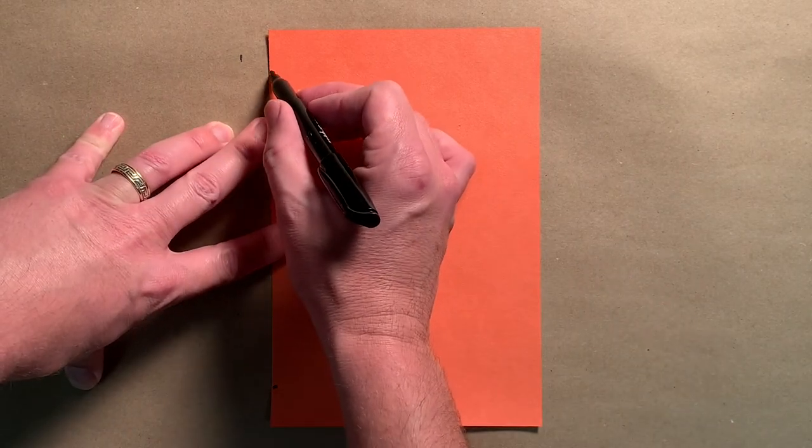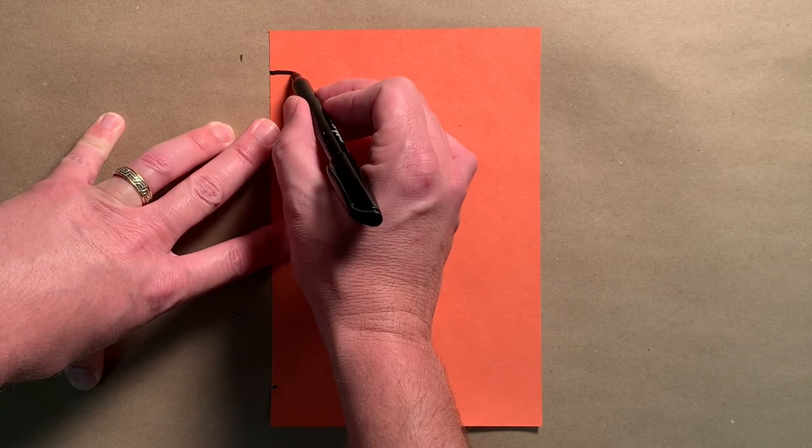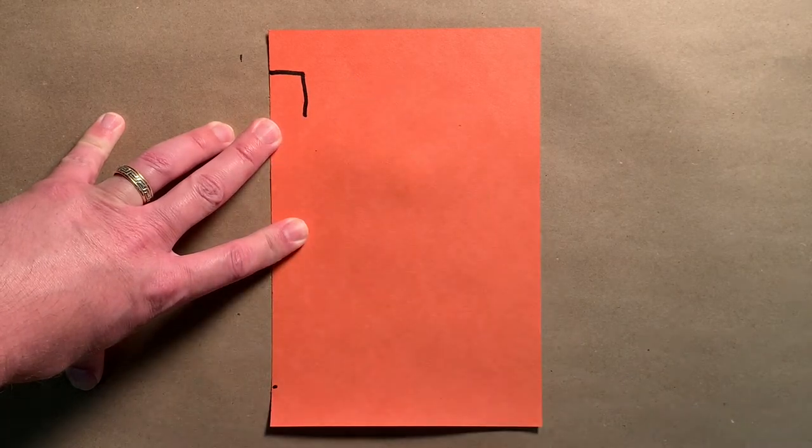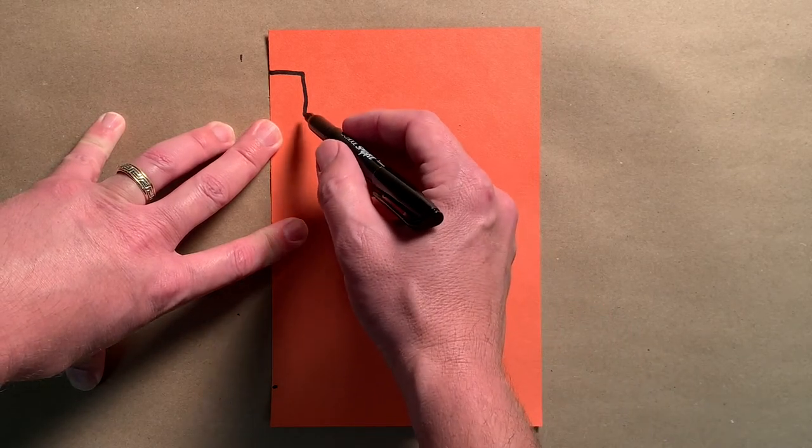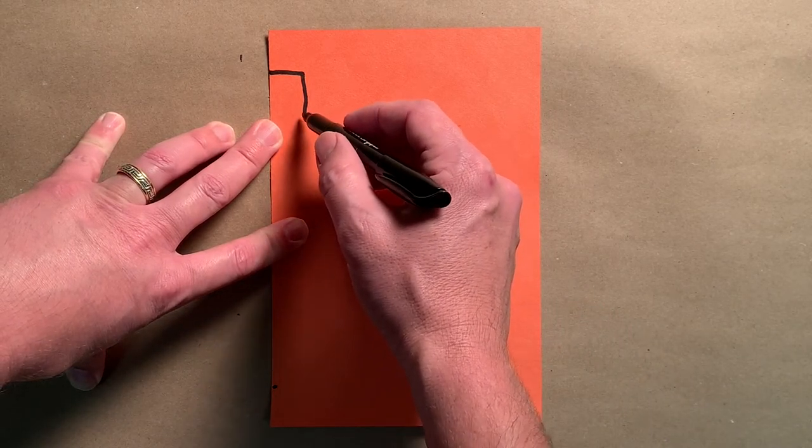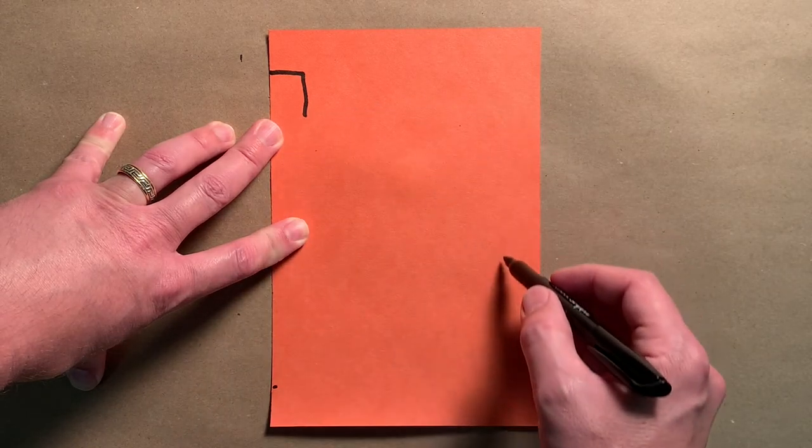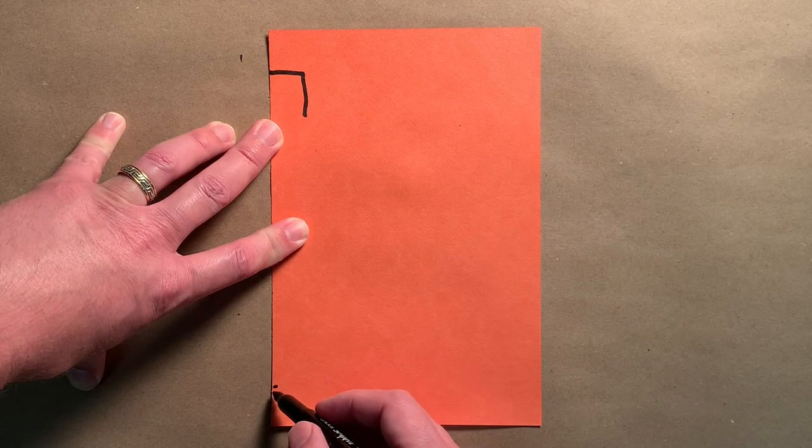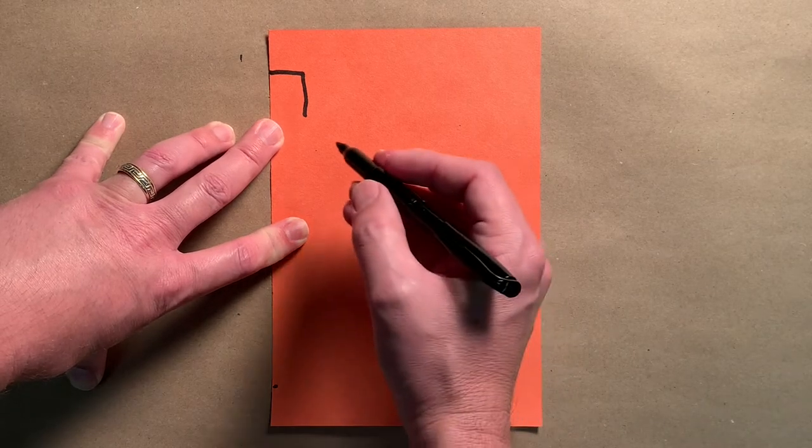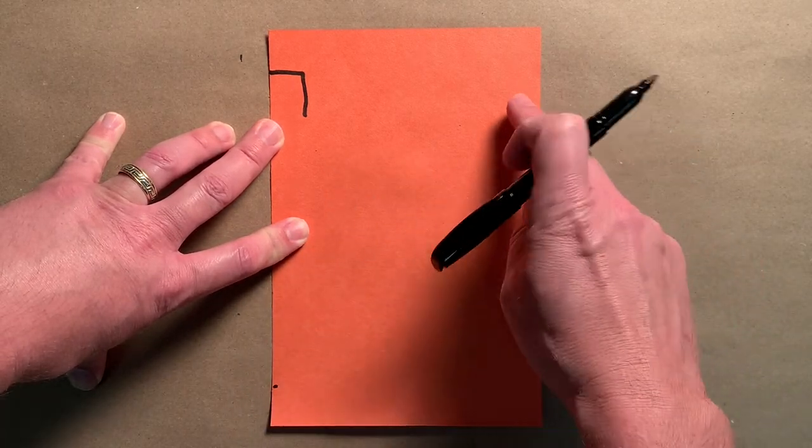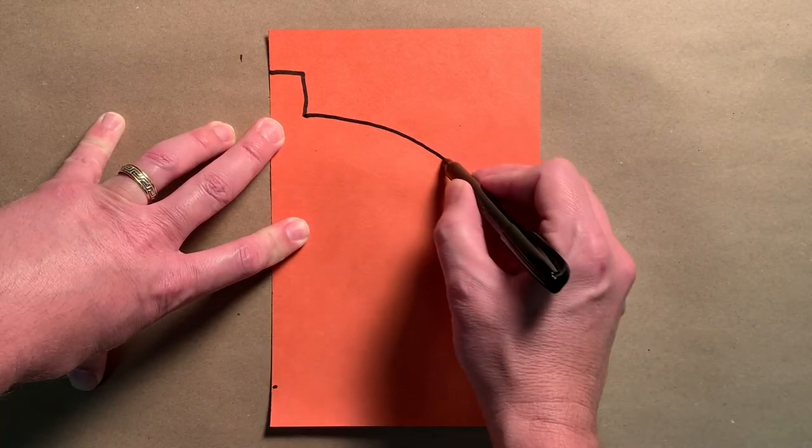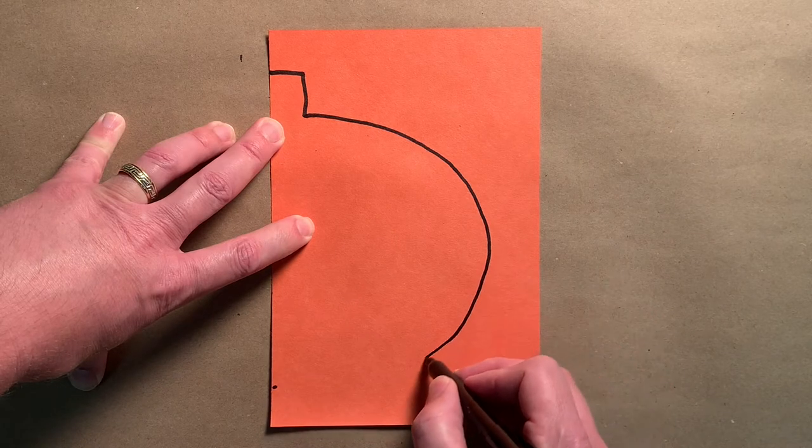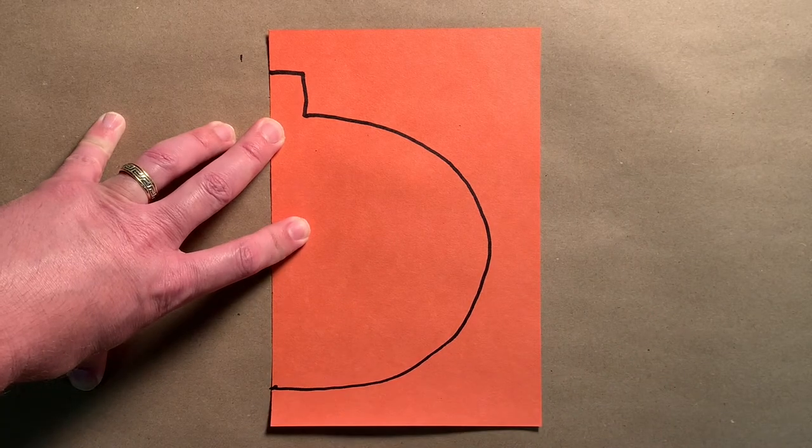We're going to draw half of the pumpkin shape now. Starting at the dot on the top, we're going to make a number seven. At the bottom of the seven, we're going to make a curve line that goes all the way around and stops at the dot on the bottom. It's like a backwards C shape. Make sure you don't go too close to this edge though. Curve it, come back around, go all the way to the dot.